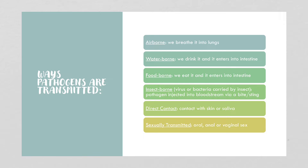Waterborne pathogens enter through contaminated water into your intestines and bloodstream. Foodborne pathogens enter through contaminated food. Insect-borne pathogens — which can be a virus, bacteria, or protozoan — are injected into your bloodstream through a bite or sting. Direct contact involves touching someone's skin or saliva, or touching a contaminated surface. Sexually transmitted pathogens are spread through oral, anal, or vaginal sex.